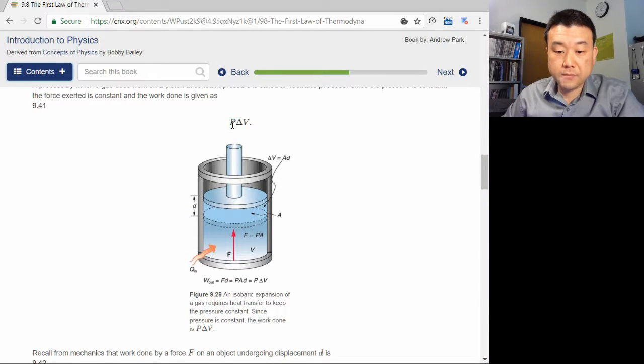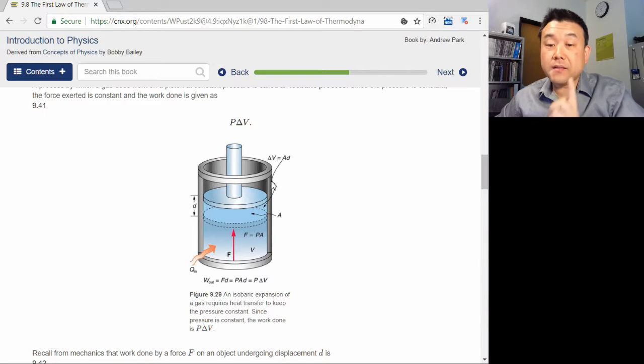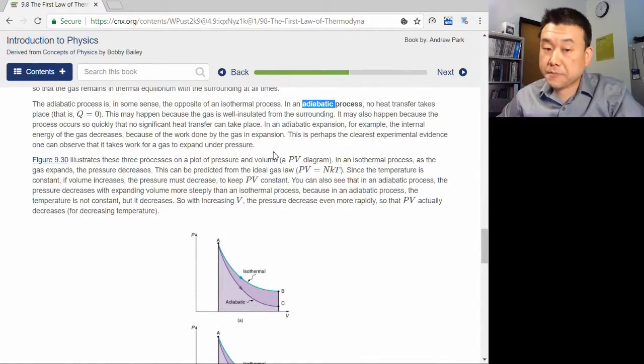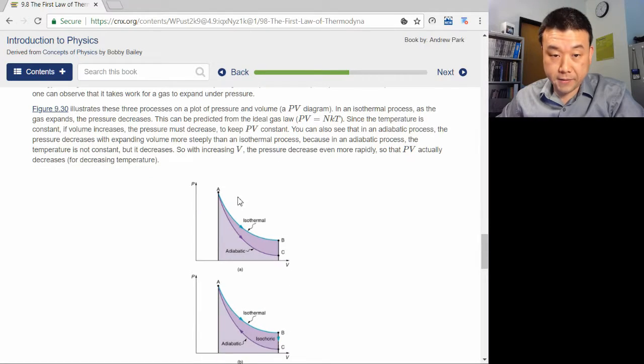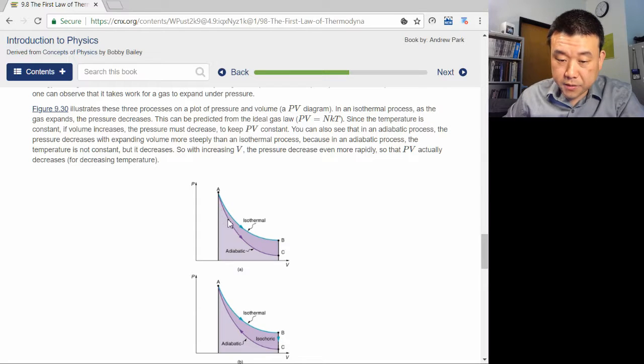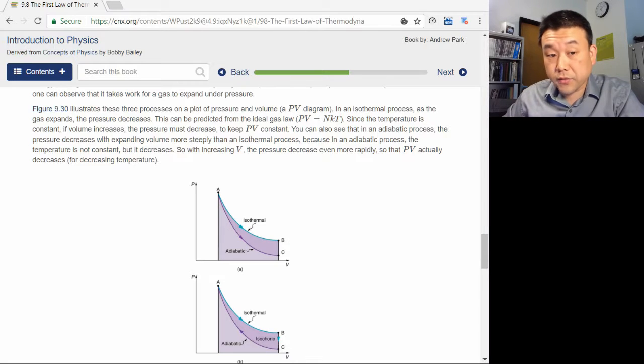The most striking example of this description of work, and the first law of thermodynamics you will see in this book, is adiabatic expansion. Expanding gas cools down. You can see it in this graph here. Not because the gas molecules are not colliding as frequently, or because its pressure goes down.